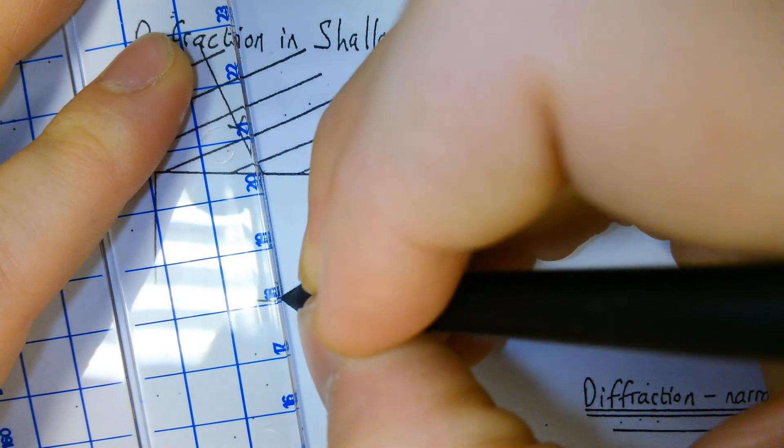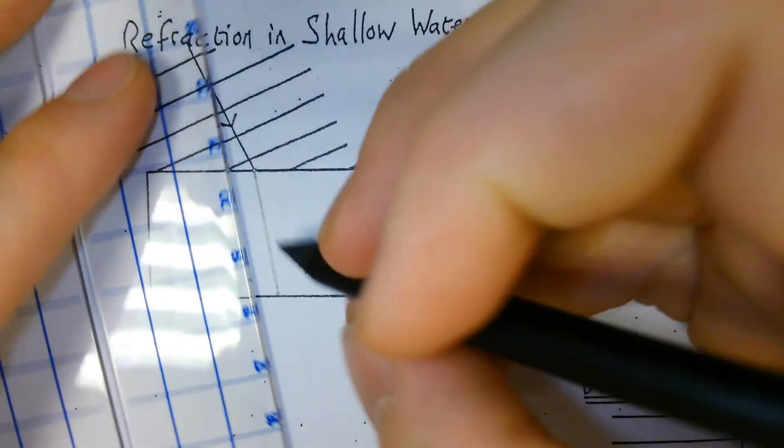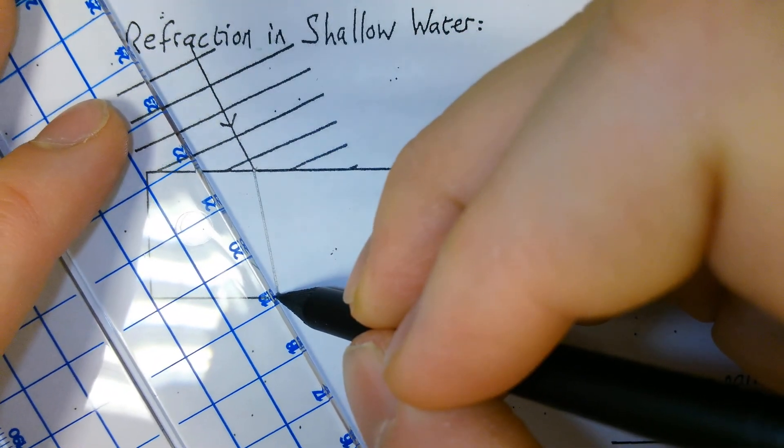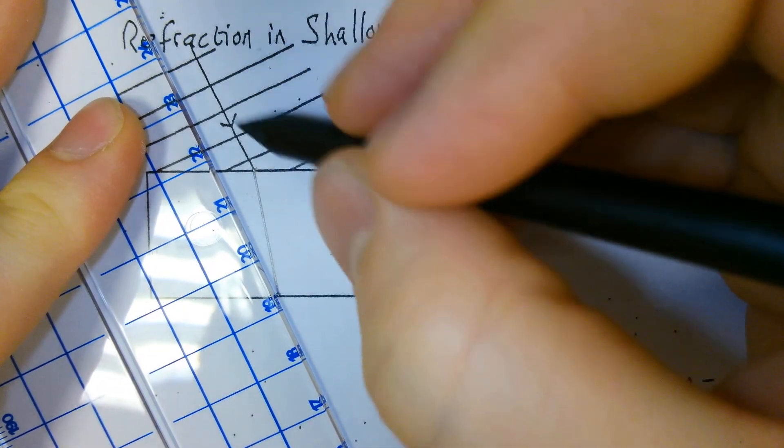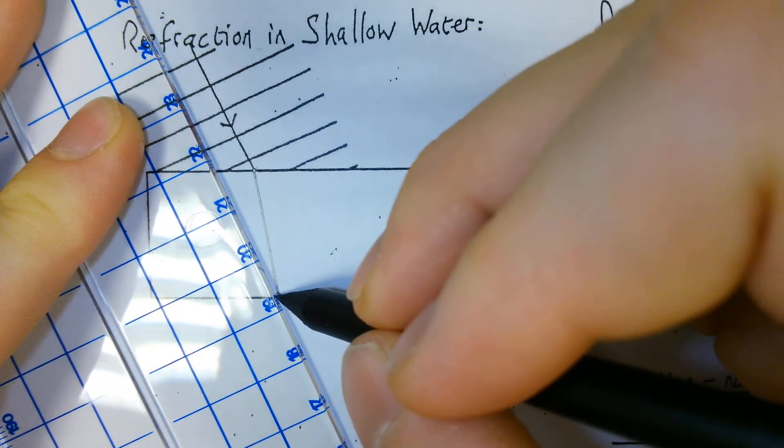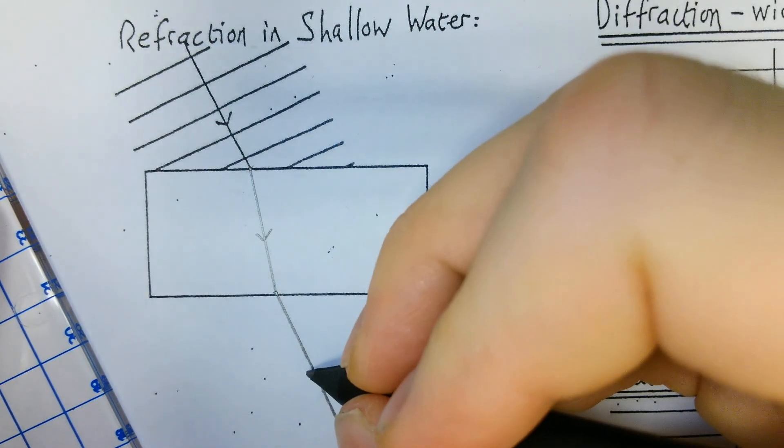So refracted towards the normal, making sure that it doesn't go completely parallel. So refracted towards the normal, and when it comes out the other side, you're wanting to get it lined up so it's parallel again to this initial direction. So that's where it's coming in.